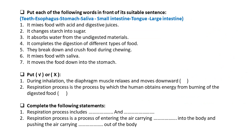Let's check your understanding. Number one — it mixes food with acid and digestive juices. If you said the stomach, then you're right. Number two — it changes starch into sugar. It's the saliva. Number three — it absorbs water from the undigested materials: the large intestine. Number four — it completes the digestion of different types of food: the small intestine. Number five — they break down and crush food during chewing: the teeth. Number six — it mixes food with saliva: the tongue. Number seven — it moves food down into the stomach: the esophagus.